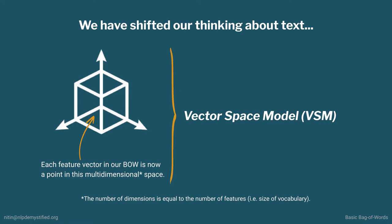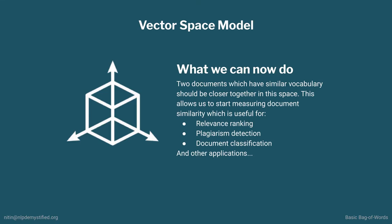Each document or feature vector in our bag of words is now a point in this multidimensional space. This is called a vector space model or VSM. This transition into a VSM is a big deal. If two documents have a similar vocabulary, then their vectors should be closer together in this space. We can view how documents cluster or how they're distributed. This allows us to quantitatively measure document similarity, which is useful for a variety of applications, from ranking to classification.